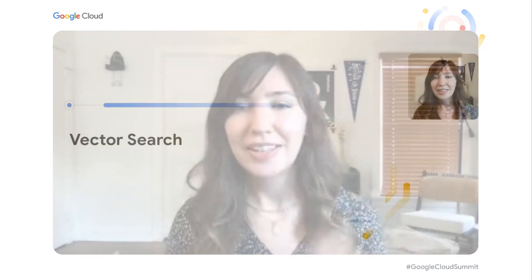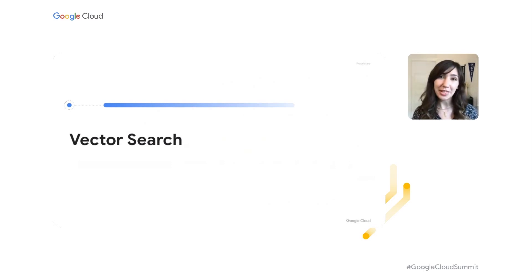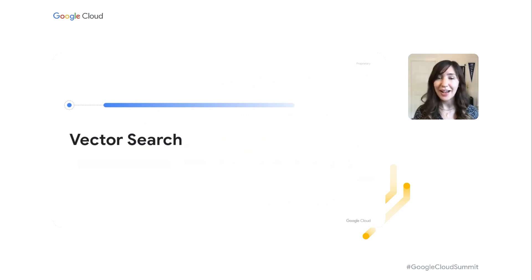Today we're going to talk about two recent Google Cloud offerings that come directly out of research. The first one has to do with vector search. Nowadays in machine learning, the technique of vector search is really popular. In fact, if you saw the demo at the beginning of our Applied AI Summit, you saw Nikita and Zach walk you through a demo that used vector search to do question answering.